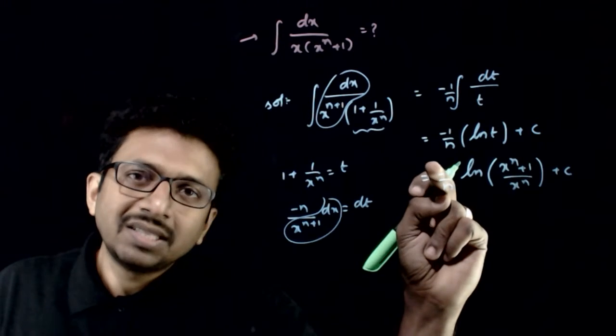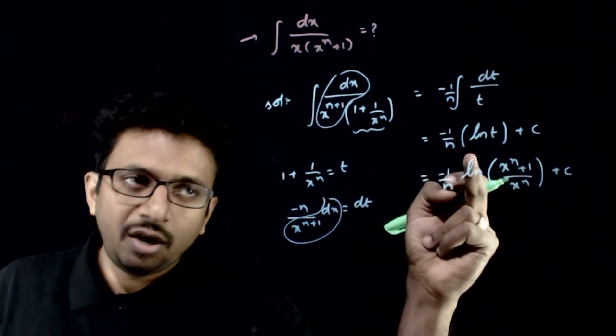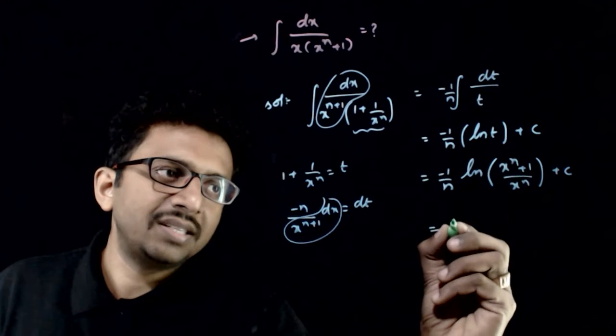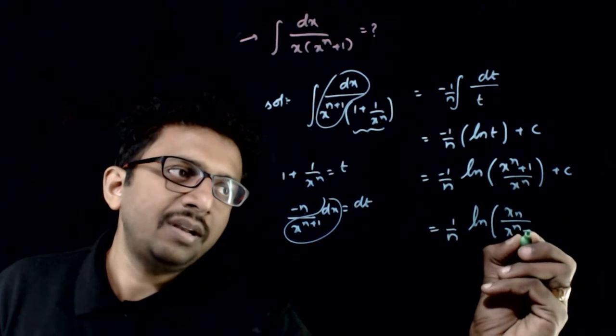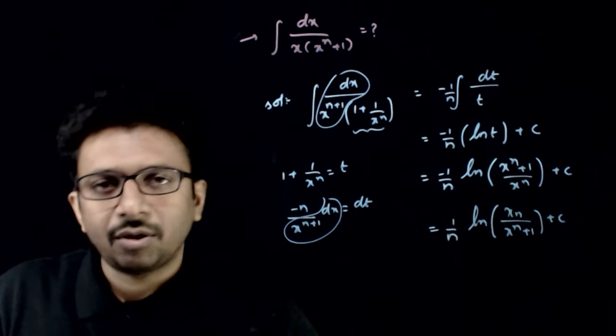This can be the answer. If you send this minus into the log, this becomes power. That is equal to 1 by n log of x power n by x power n plus 1 plus c. This can also be the answer.